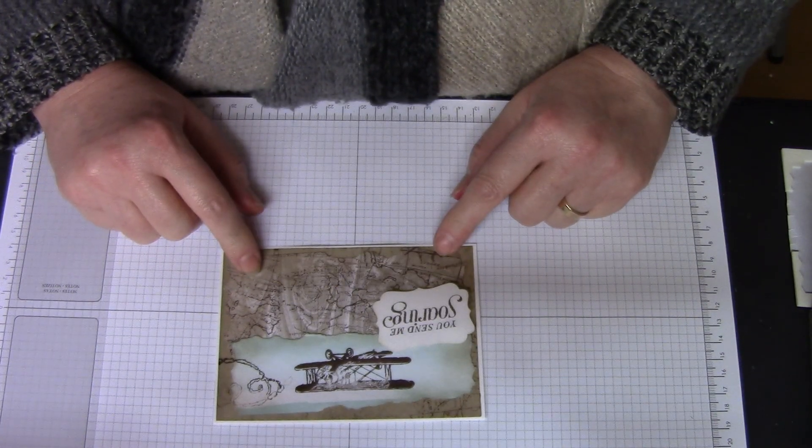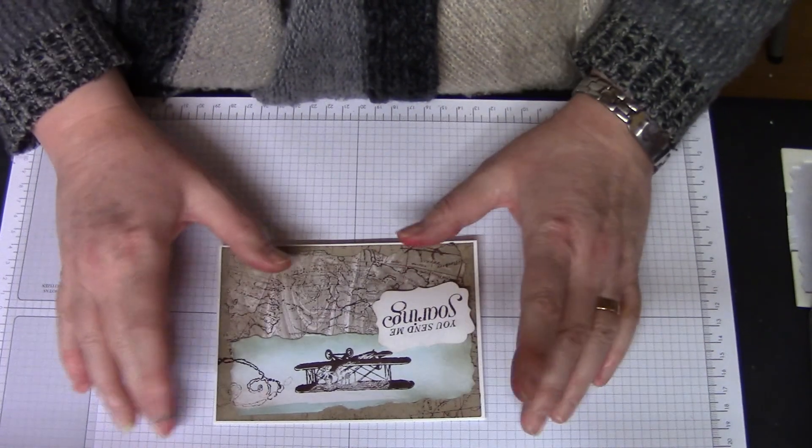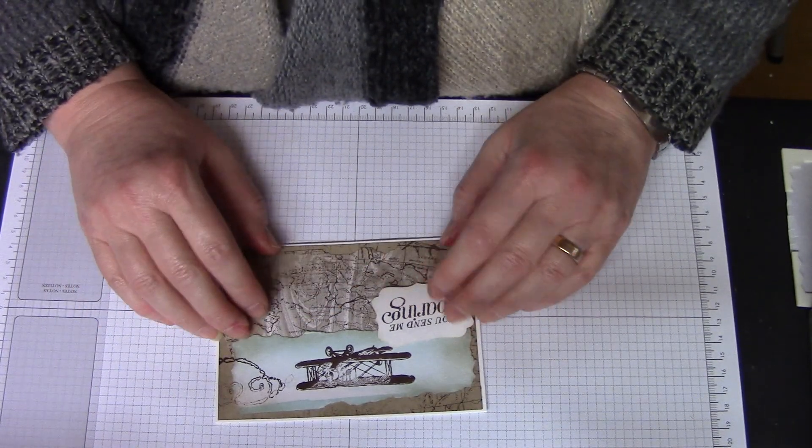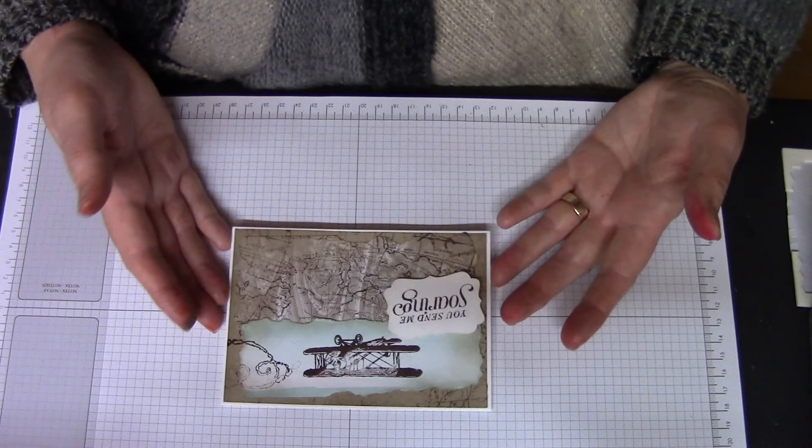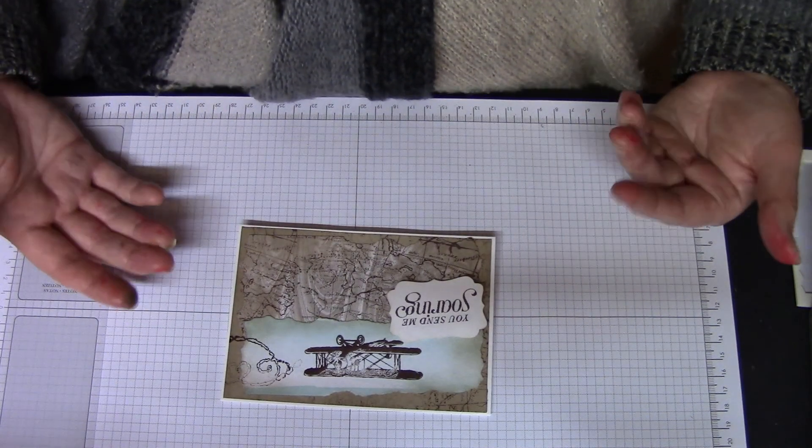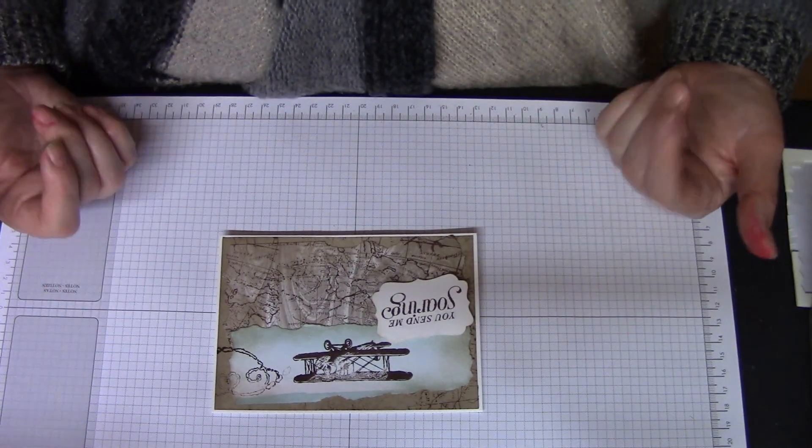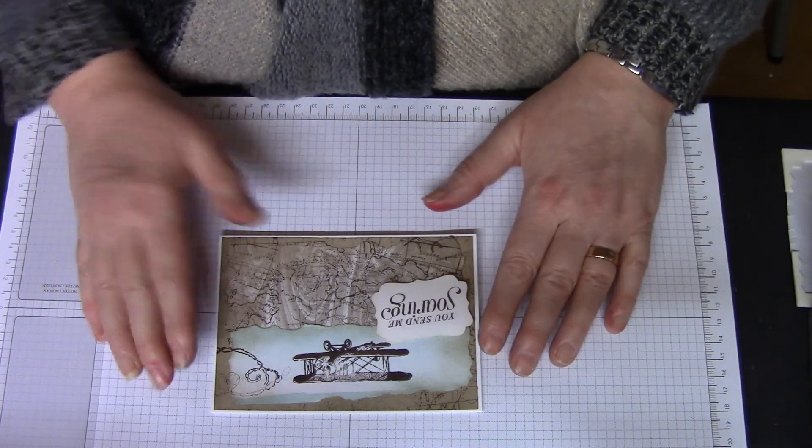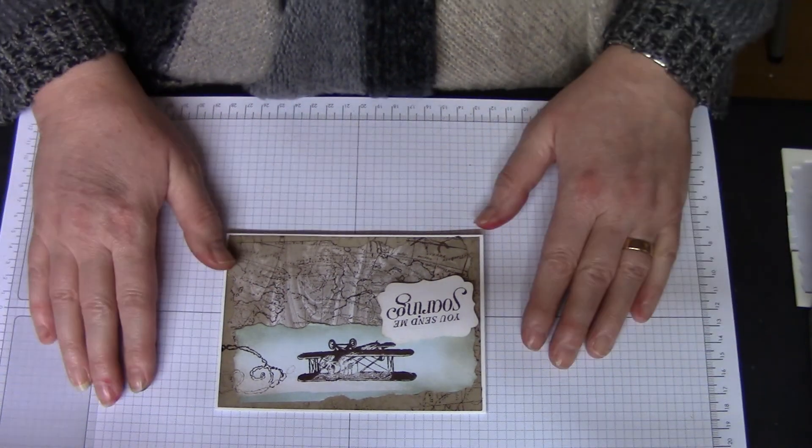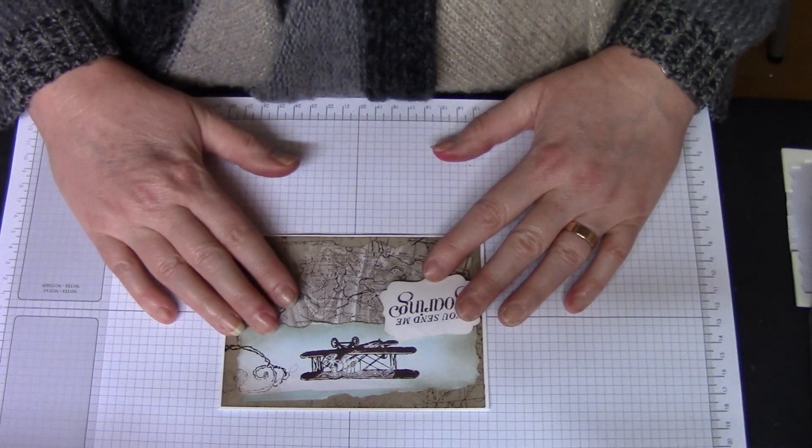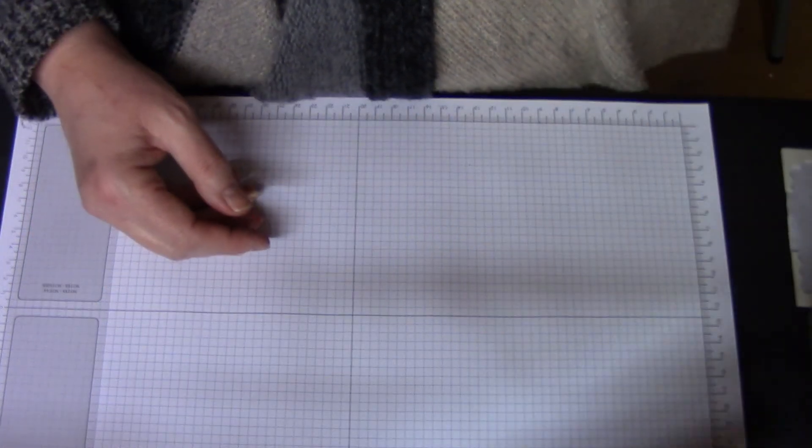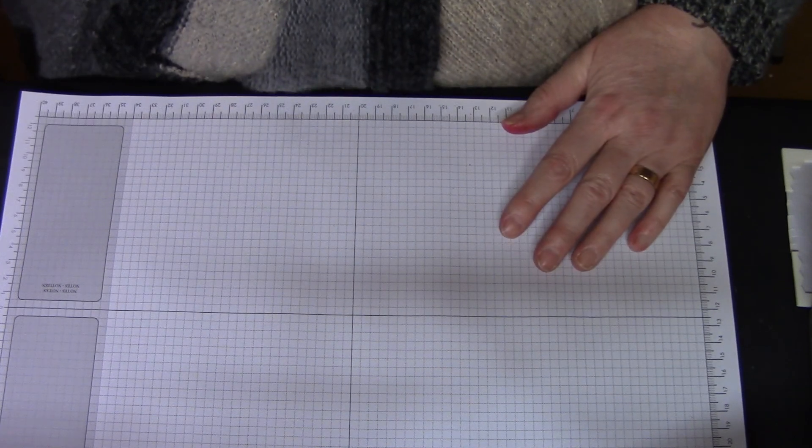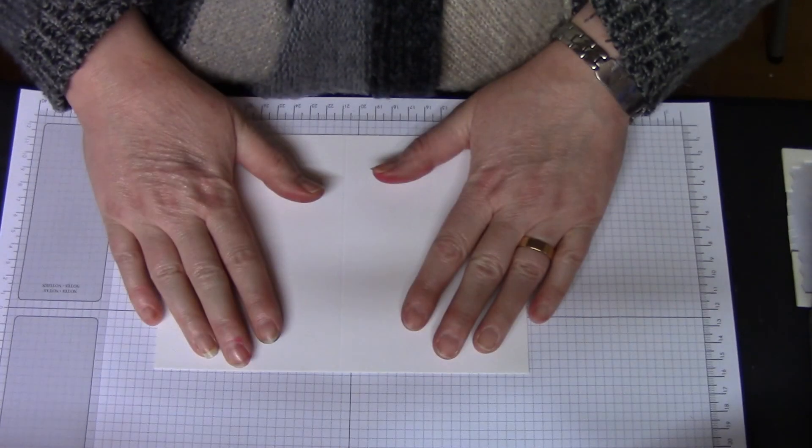That's what we're doing today and I've given it this sort of grungy feel because it is being used for a masculine card. There's no reason why it would have to be a masculine card at all. It could be unisex completely, but you just might change some of the color schemes. So this is what we're doing today. The first job, as always, is to make your card base.